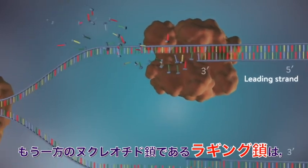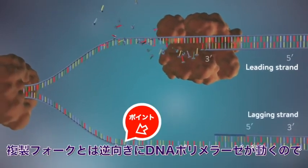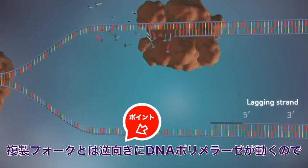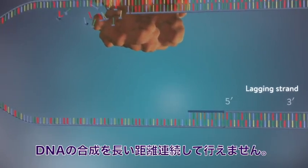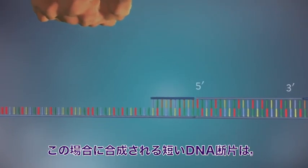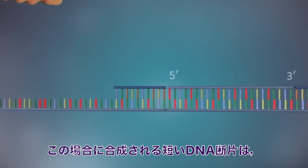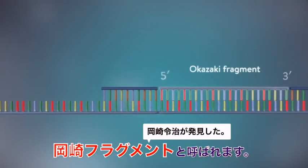The other strand, the lagging strand, cannot be made in this continuous way because it runs in the opposite direction. The DNA polymerase can therefore only make this strand in a series of small chunks called Okazaki fragments.